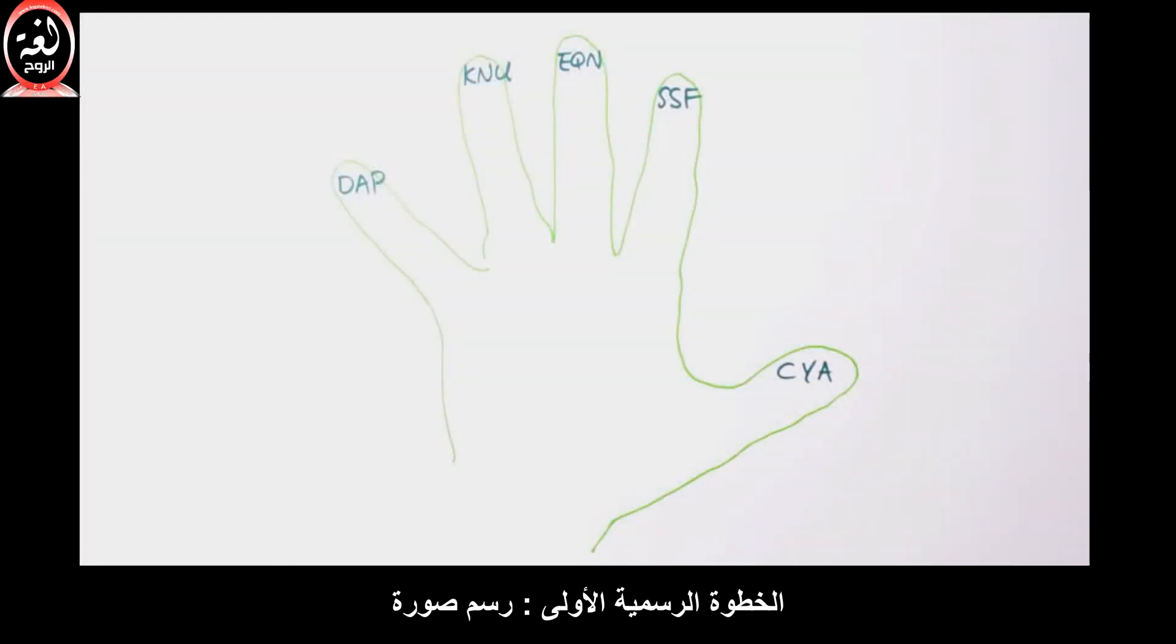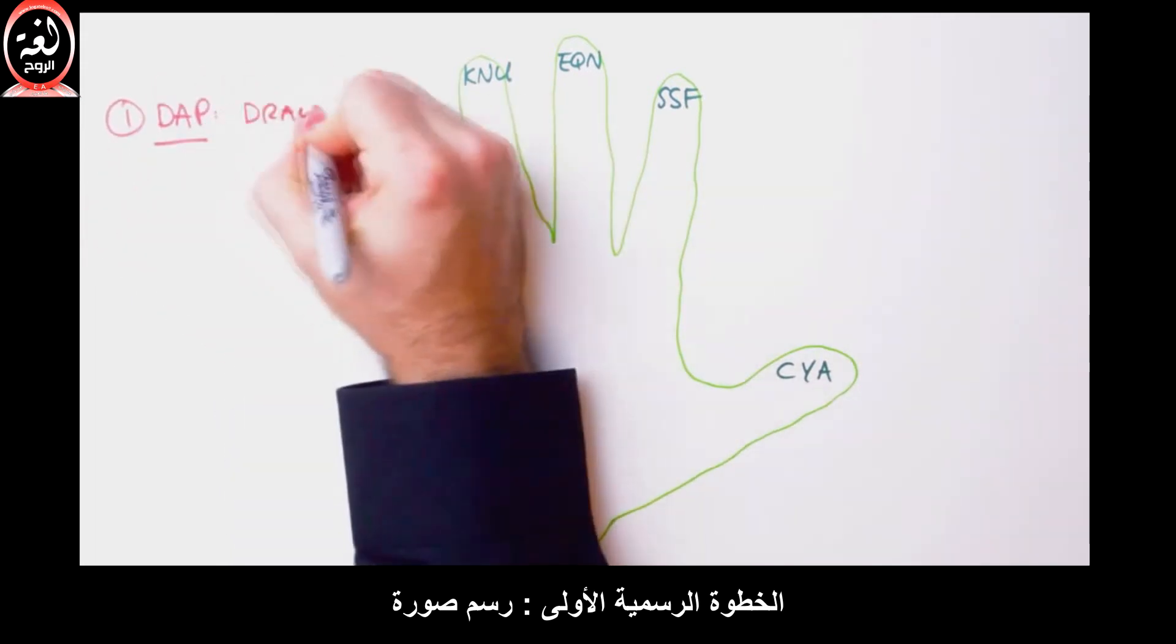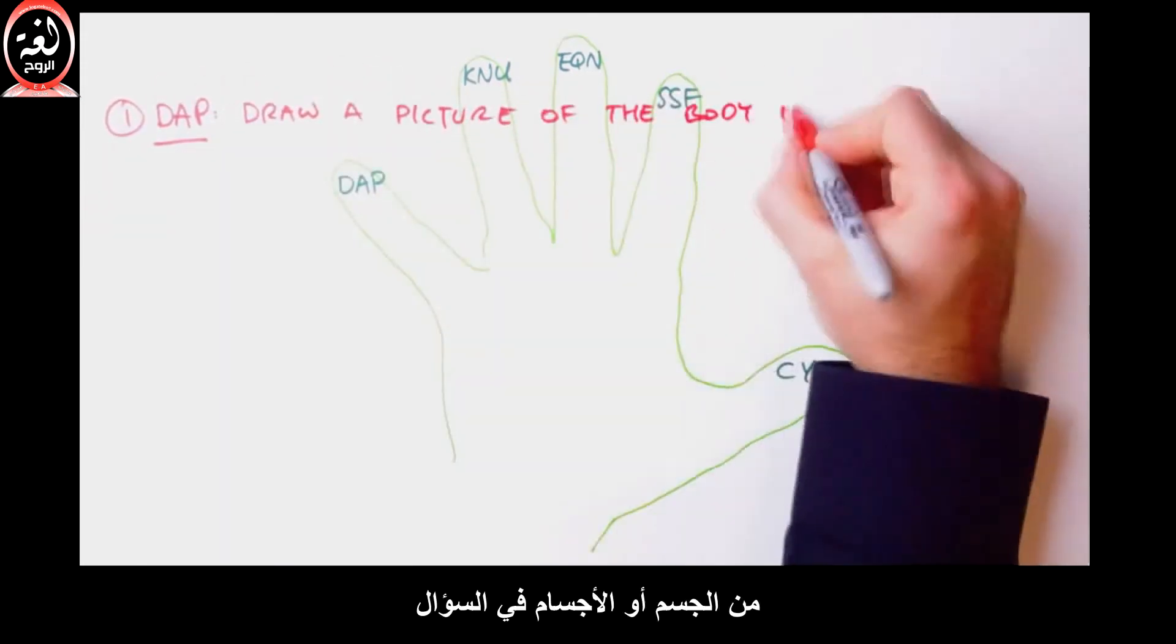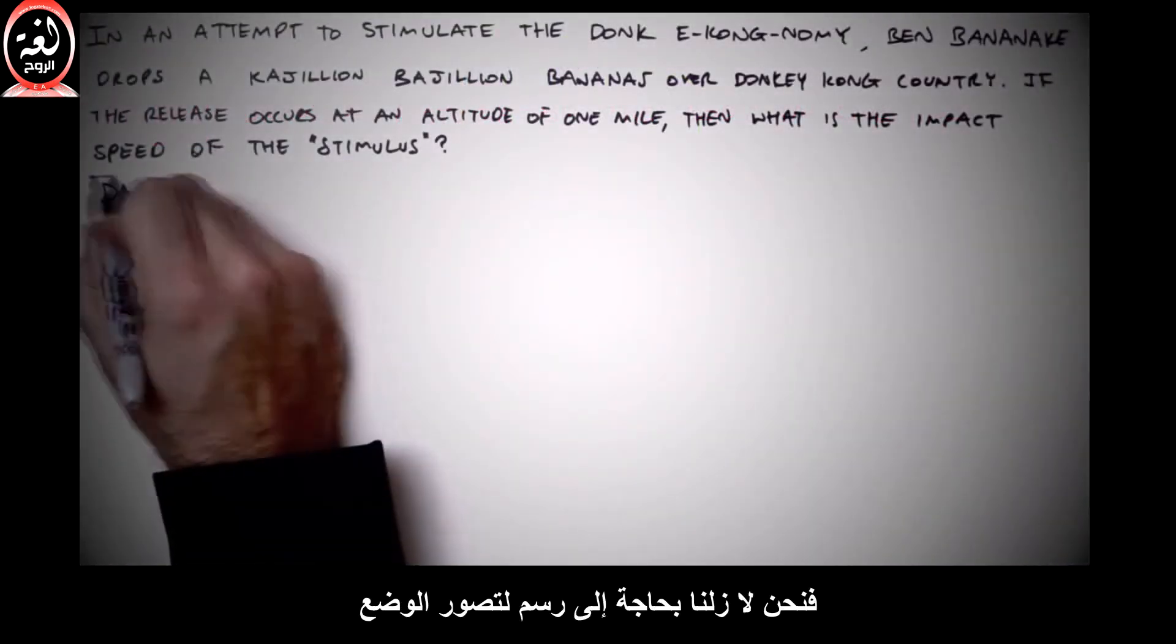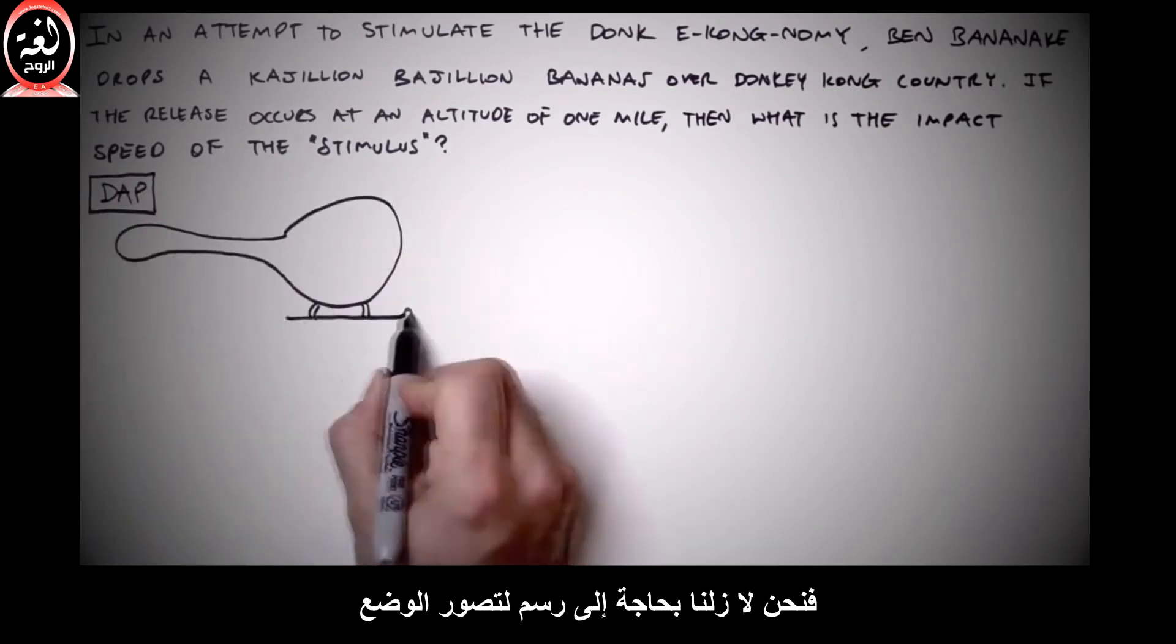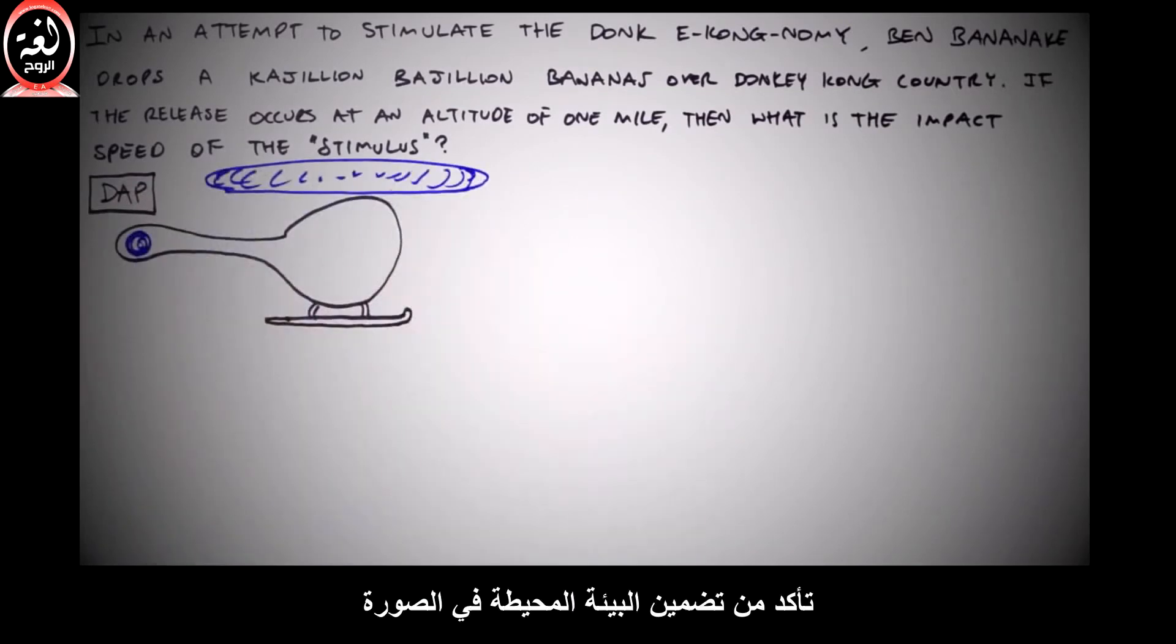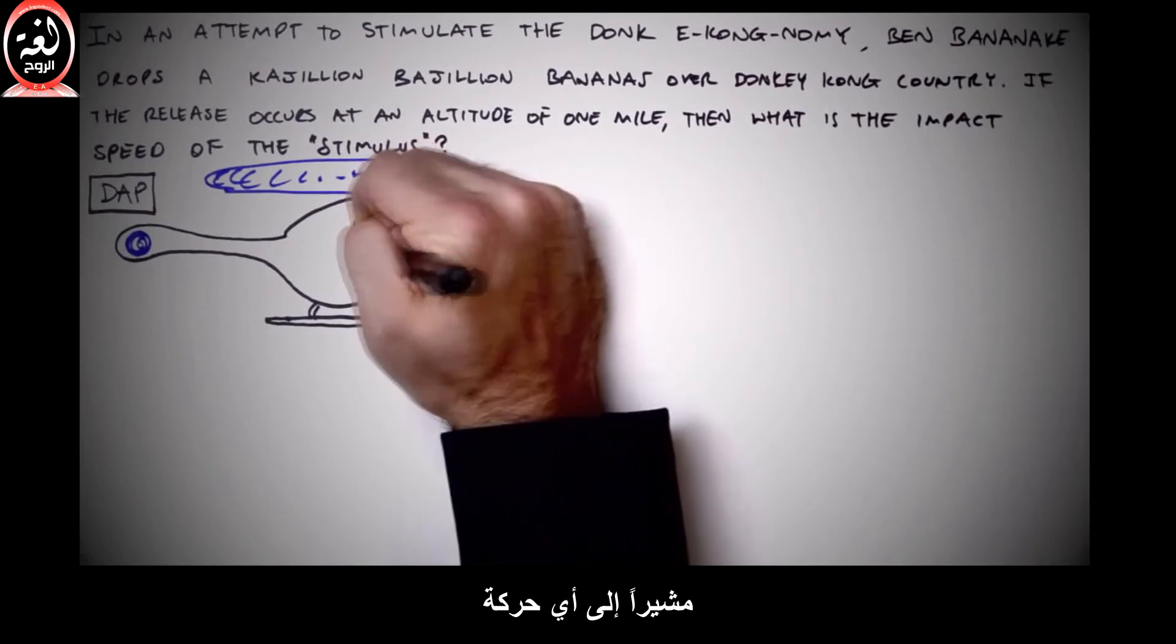Alright, first official step. Draw a picture of the body or bodies in question. Even if our artistic sensibilities have stagnated since second grade, we still need to draw a picture in order to visualize the situation. Be sure to include the surrounding environment in the picture, noting any motion that's occurring.